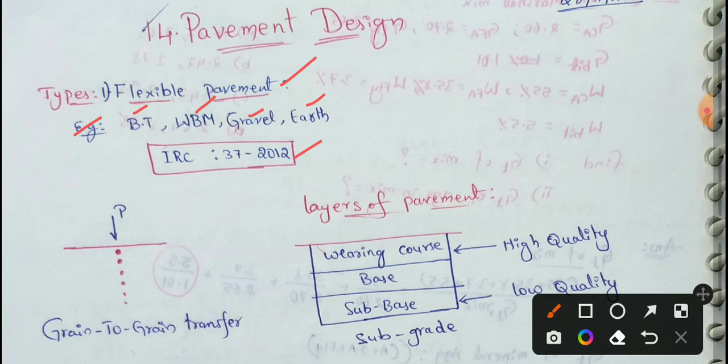At the same time, flexible pavements consists of a series of layers with the highest quality of material near the surface. When we choose flexible pavements, we have a series of layers. First, we have subgrade, subbase, base, wearing course. We have a series of layers present.